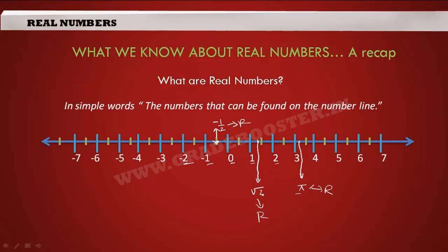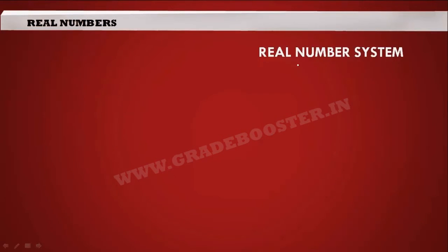Even though all these are real numbers, they are expressed in different forms and called by different names. To understand this better, we need to look at the number system diagram. Let us look at the parts and partitions of the real number system.